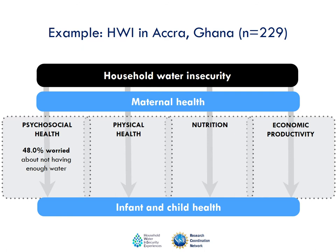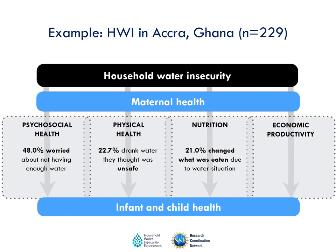For example, when we applied the household water insecurity index in Accra, Ghana in Western Africa, we found that 48% of respondents — very nearly half of the 250 households we talked to — had worried in the previous month about not having enough water. Almost one quarter had drunk water they thought was unsafe. One fifth had changed what was eaten in the household due to the water situation. And almost a quarter had had water problems that prevented them earning money, either directly through not being able to wash or present themselves appropriately, or indirectly through not being able to apply water to household agriculture.